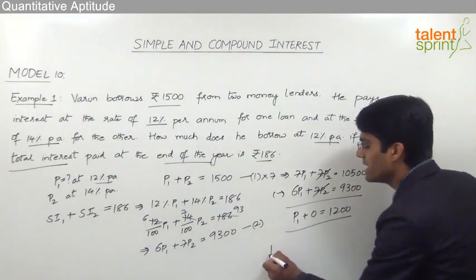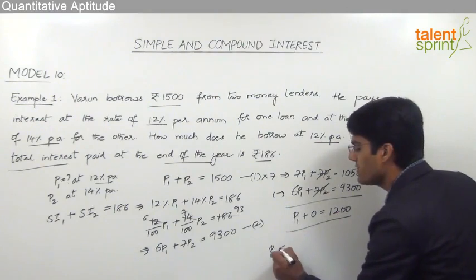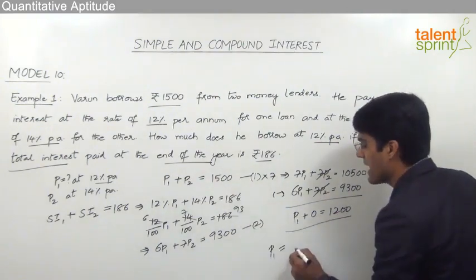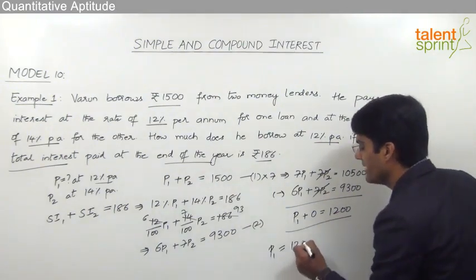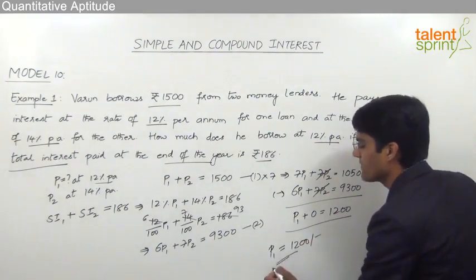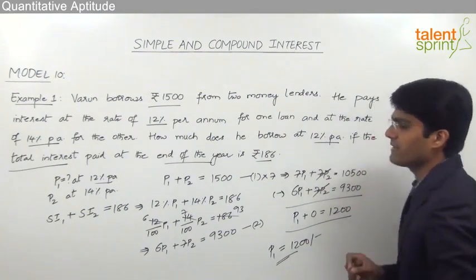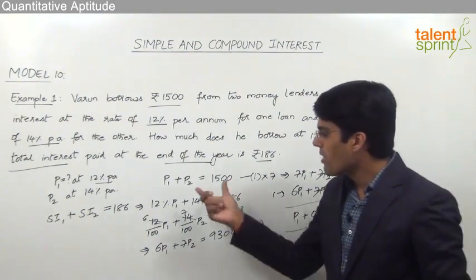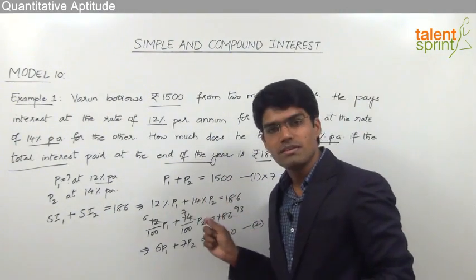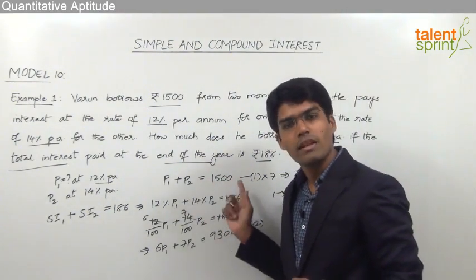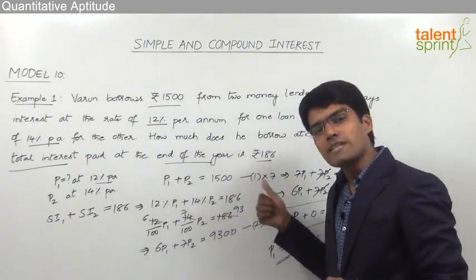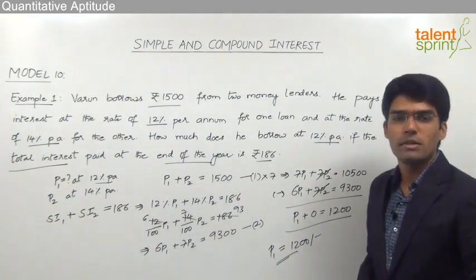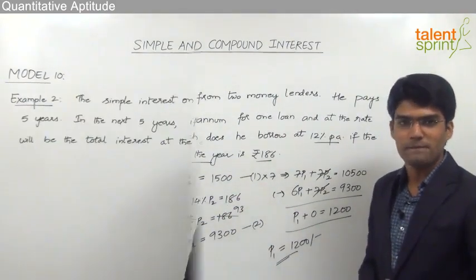So very clearly, the amount that has been borrowed at 12% per annum — P1 — is equal to Rs 1200. This is how you can frame the proper equations in terms of P1 and P2 and solve those two equations to find out P1 or P2 respectively.